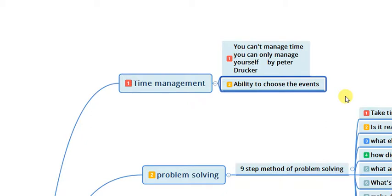Everybody has the ability to choose the events going on in their life and to prioritize them. Give first, second, and third priority to things accordingly. For example, if tomorrow is your exam, there are many events — playing games, cooking, watching TV — but the most important priority at that time is studying. When you prioritize and optimize accordingly, you get more out of your time.